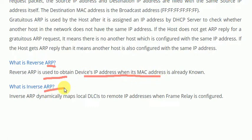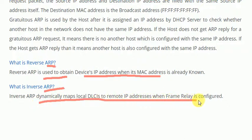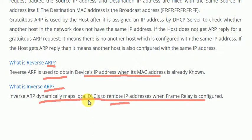What is inverse ARP? Inverse ARP is a different term from reverse ARP. Inverse ARP dynamically maps a DLCI (Data Link Connection Identifier) to a remote IP address when frame relay is configured. It is used at Layer 2, for example in switch configurations, and is used for connections between two types of networks or connections over the internet via frame relay. Inverse ARP maps the local DLCI to the remote IP address.